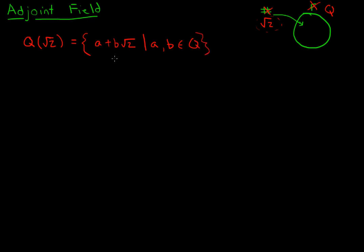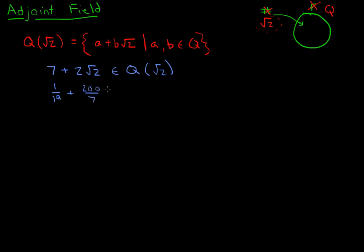And it turns out this defines a field. I'll go through a couple of the steps. Some examples of things in there: 7 + 2√2 would be an element of Q adjoin √2. Or 1/19 + (200/7)√2 would also be an element. As long as these two coefficients are rationals, it'll be something in this set. To show closure under addition is pretty easy: take two elements, say m + n√2 and x + y√2, where m, n, x, y are rationals.